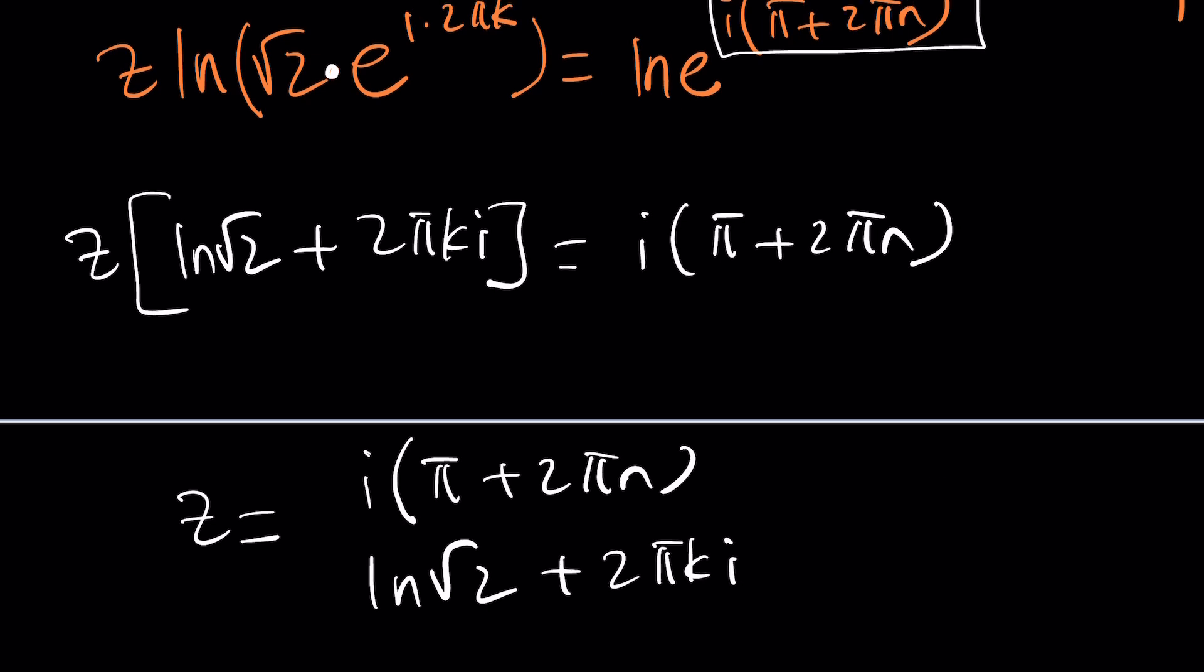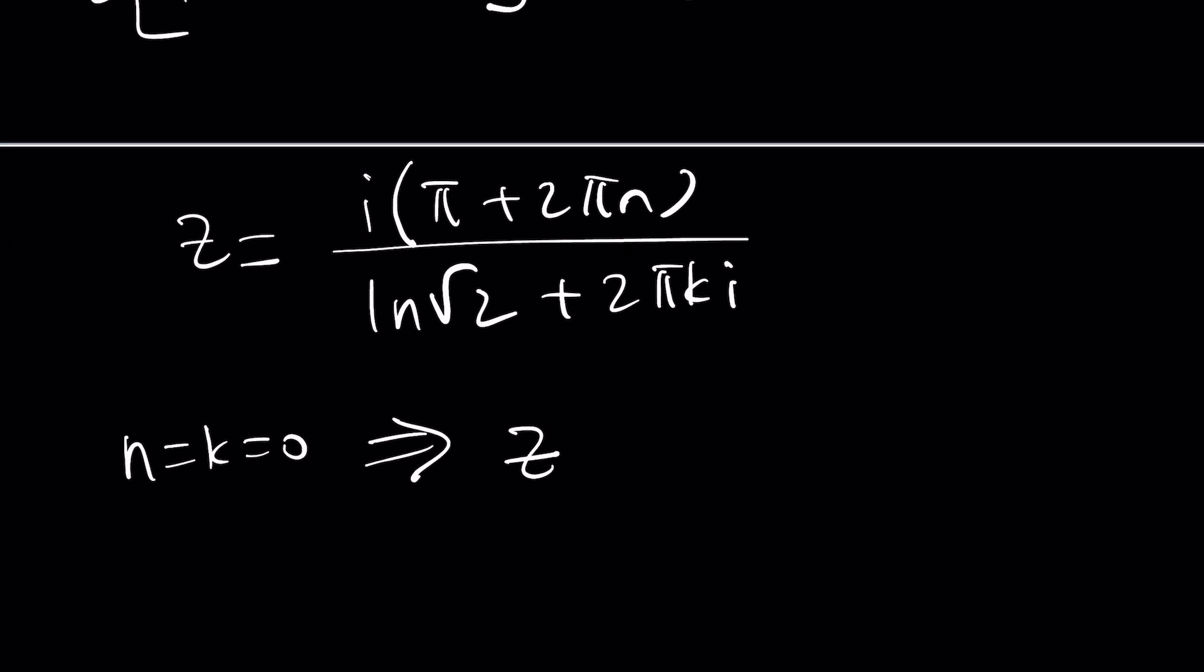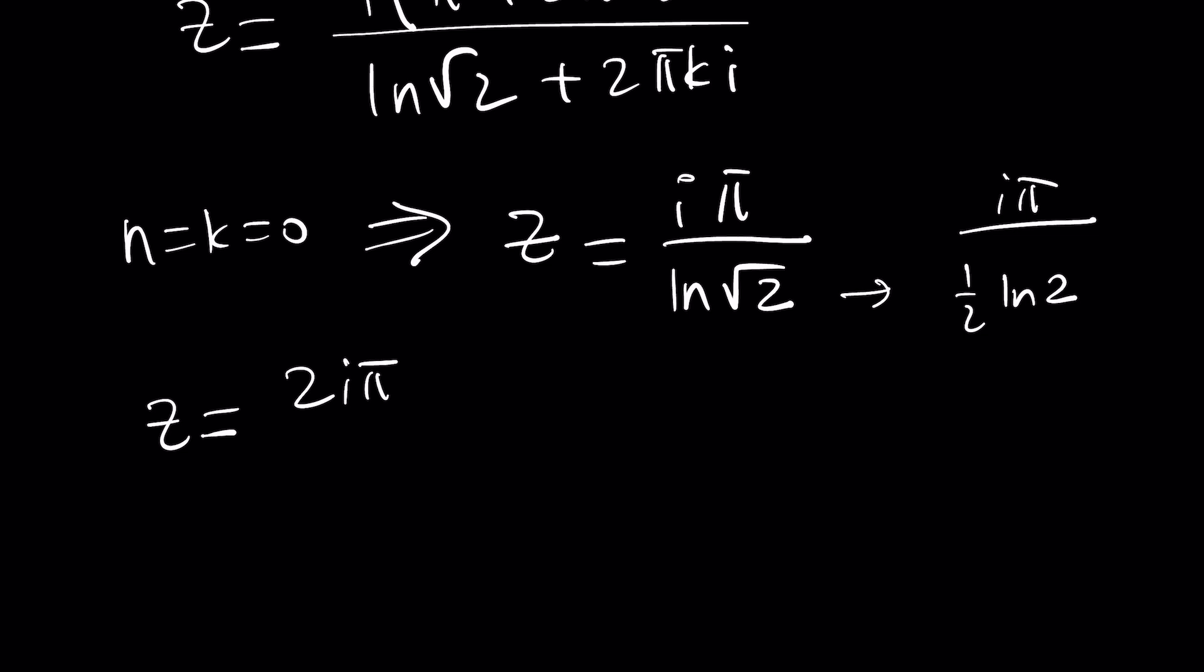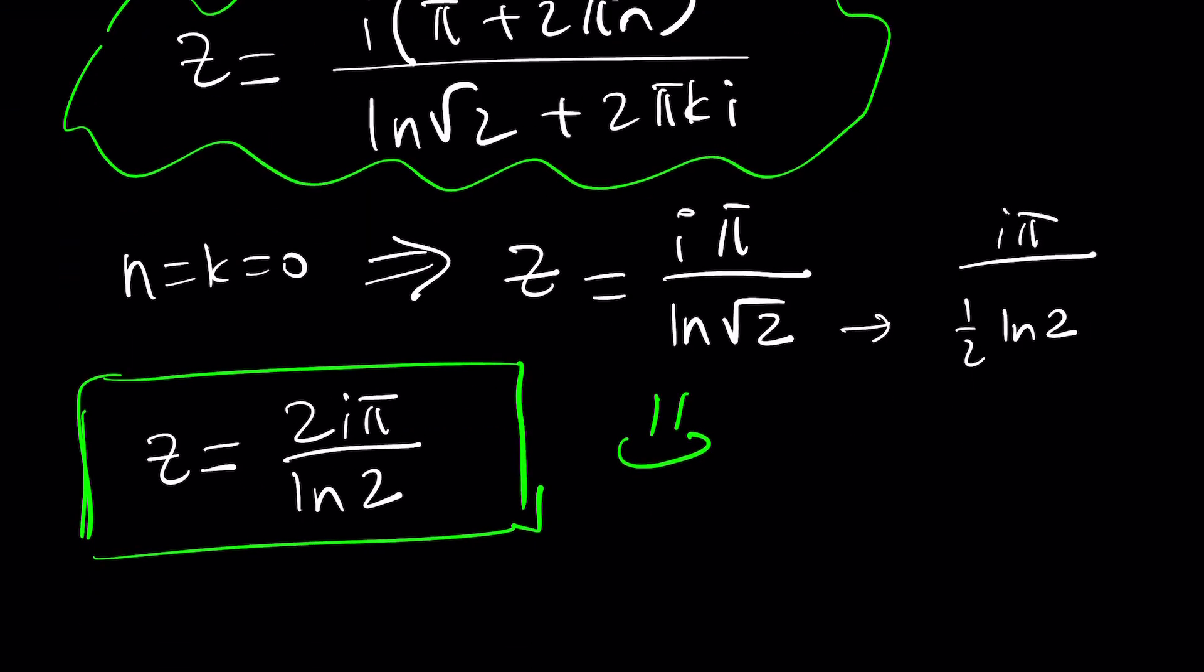But here's a million dollar question: do we really need both of these integers n and k? Here's what you can do. First suppose n and k are both zero, so we try to get the simple solution. That will be z equals i times pi divided by ln root 2. And ln root 2 can actually be written as one half of ln 2 because root 2 is 2 to the power one half, so when you divide i pi by that you're going to get 2 i pi divided by ln 2. So when I show you the results from Wolfram Alpha I want you to compare this result. Do we really need both n and k? Go ahead and let us know in the comment section.